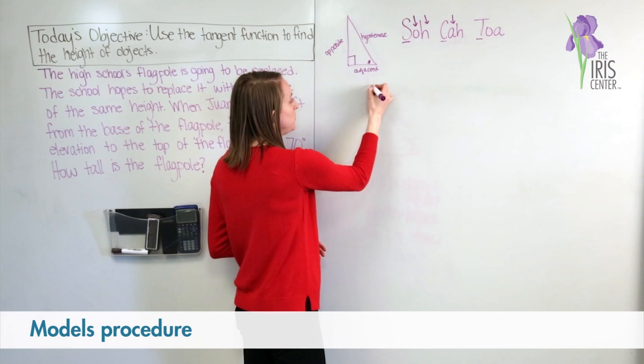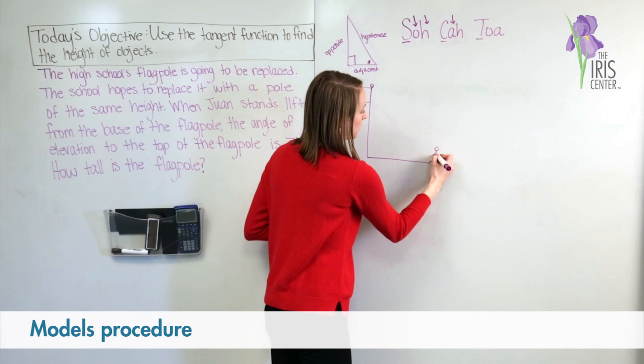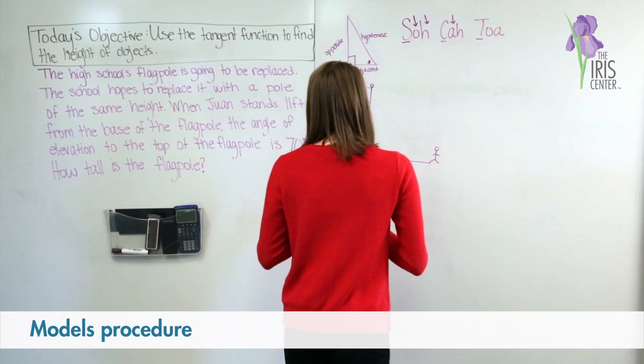So to start, I'm going to draw a picture to help me figure out what the problem is telling me. I have a flagpole, and I know 11 feet from the base of the flagpole is where the person is standing. I'm going to look back at my problem.